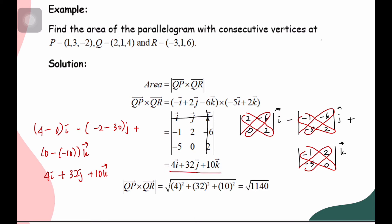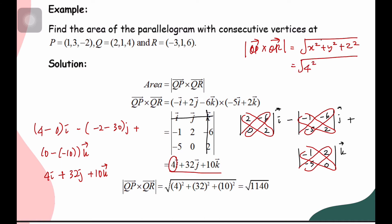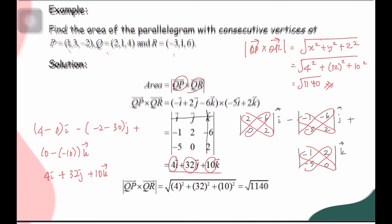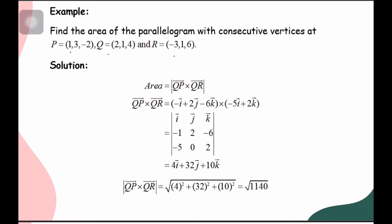The area of the parallelogram is the magnitude of QP×QR. Using the formula √(x²+y²+z²), we get √(4² + 32² + 10²) = √(16 + 1024 + 100) = √1140. This is the area of the parallelogram formed by vectors QP and QR from the three given points P, Q, and R.